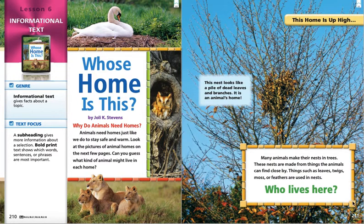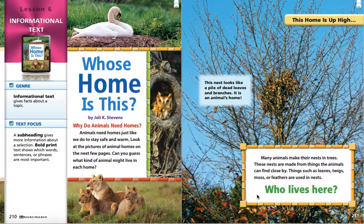Let's look on this next page, page 211. Here is a subheading — it says, this home is up high. This is a picture of a home, and here is a caption that goes along with the picture. It looks like a pile of dead leaves and branches. It is an animal's home. Many animals make their nests in trees. These nests are made from things the animals can find close by — things such as leaves, twigs, moss, or feathers are used in nests. And down here in bright green letters it says, who lives here? See if you can think in your head before I turn the page — who lives here?